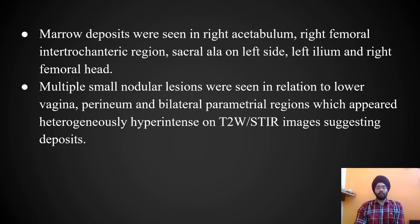Additional findings included marrow deposits seen in the right acetabulum, right femoral intertrochanteric region, sacral ala on the left side, left ileum, and right femoral head. Multiple small nodular lesions were seen in relation to the lower vagina, perineum, and bilateral parametrial regions, appearing heterogeneously hyperintense on T2 and STIR images, suggesting deposits.